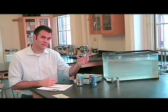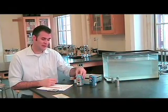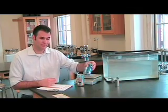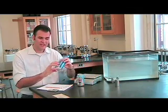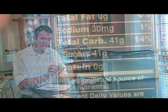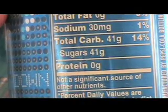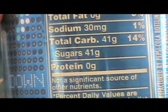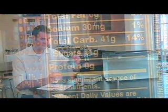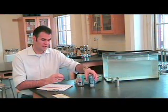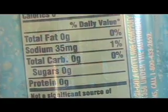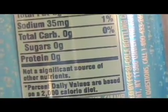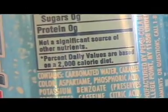Why does diet Pepsi have a mass less than regular Pepsi? Well, the answer lies on the label. If you look, regular Pepsi has 41 grams of sugar. Diet Pepsi, on the other hand, has no grams of sugar — it uses aspartame to get its sweetness.